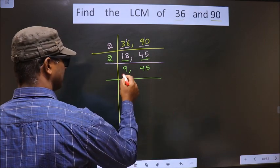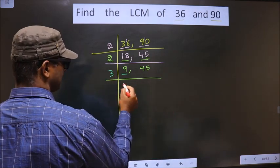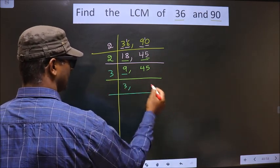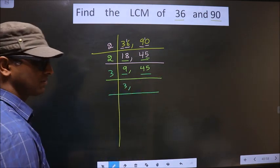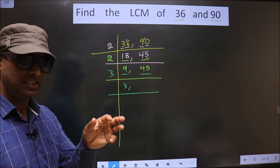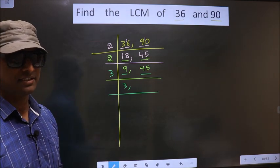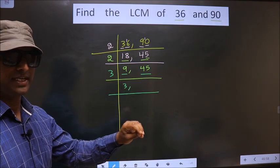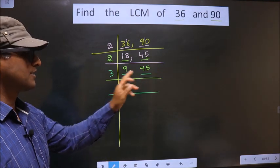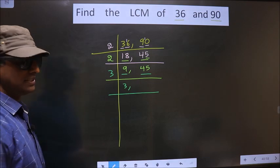Now here we have 9. 9 is nothing but 3 threes is 9. Now to check whether this number is divisible by 3 or not, for that we should add the digits. That is 4 plus 5, 9. Is 9 divisible by 3? Yes. So this number also divisible by 3.